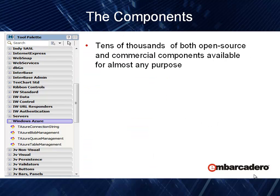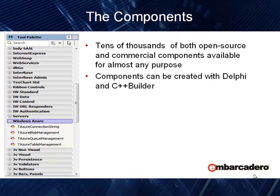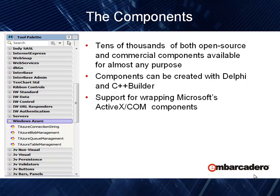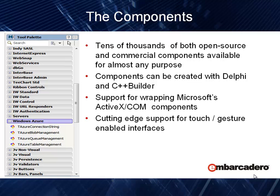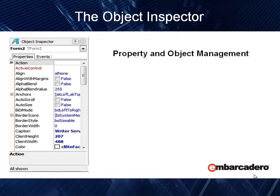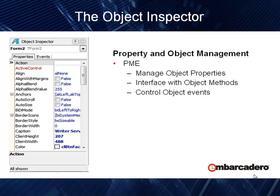The component palette is where tens of thousands of both open source and commercial components are available to help you build your applications faster. Components can be built with either Delphi or C++, and we support ActiveX COM components from the Microsoft world. We also include cutting-edge support for both touch and gesturing. The object inspector allows us to work with properties, methods, and events — managing properties, interfacing with methods, and controlling object events. This is the key to programming in C++ Builder and what makes it so fast.